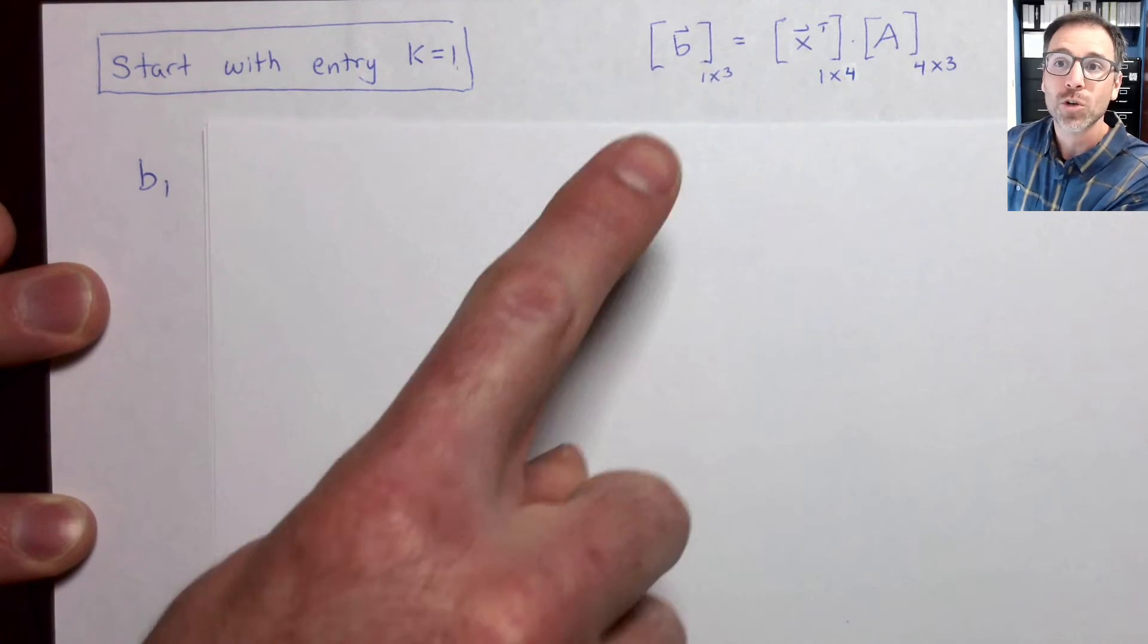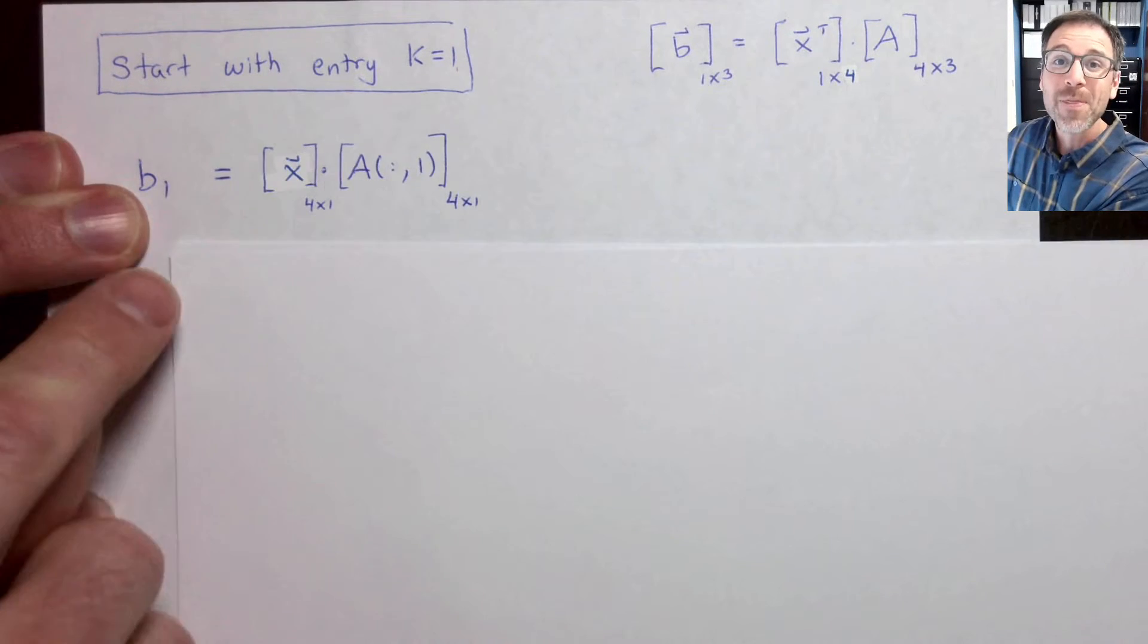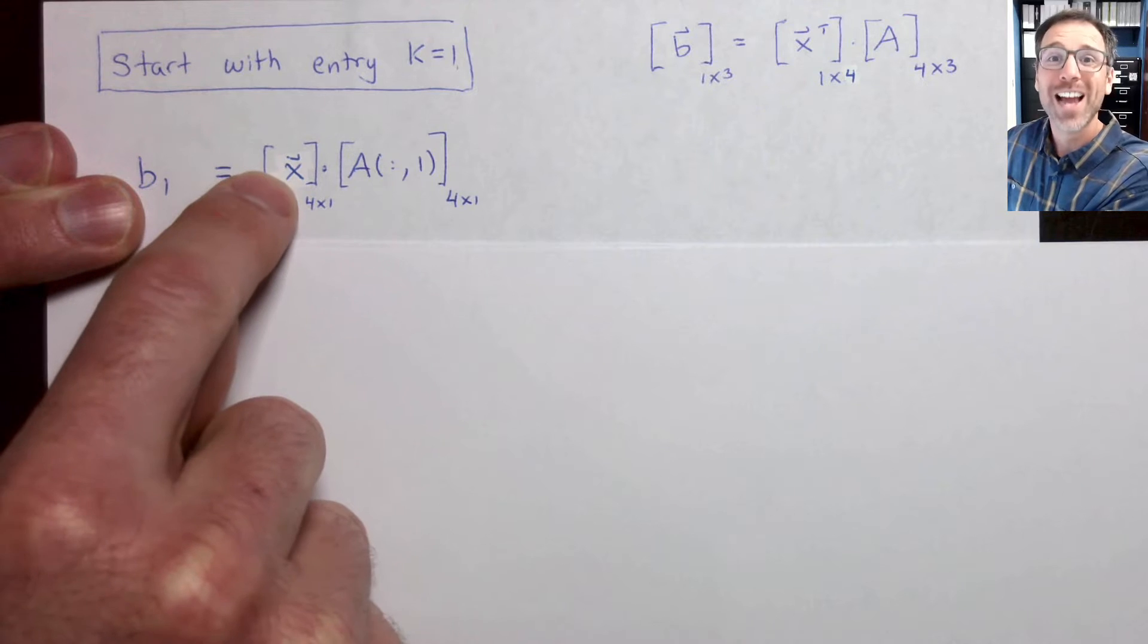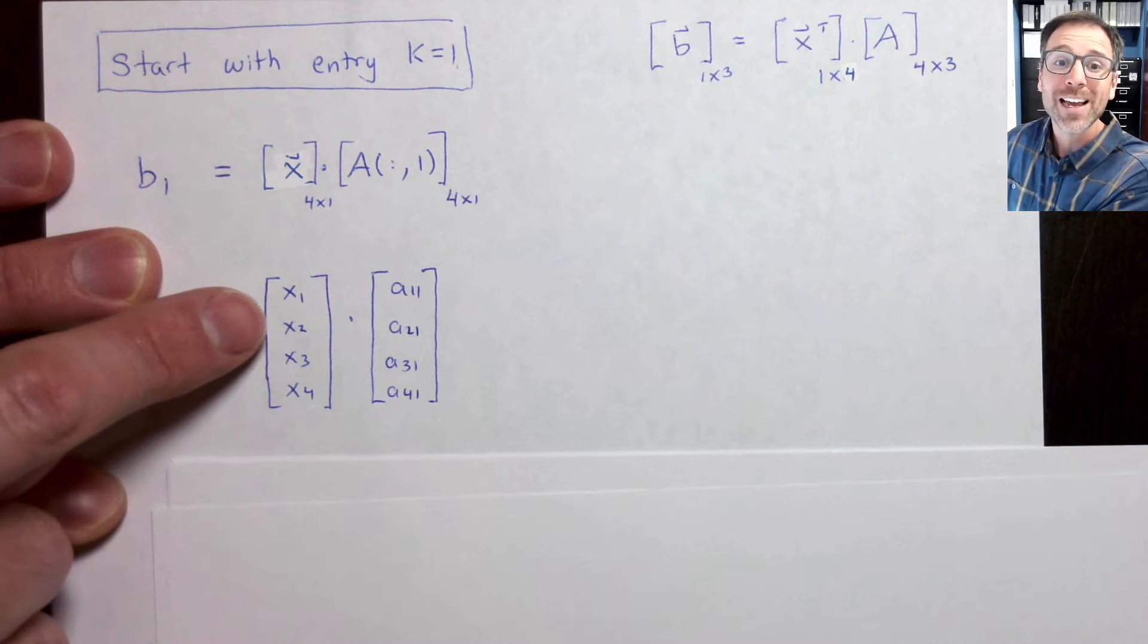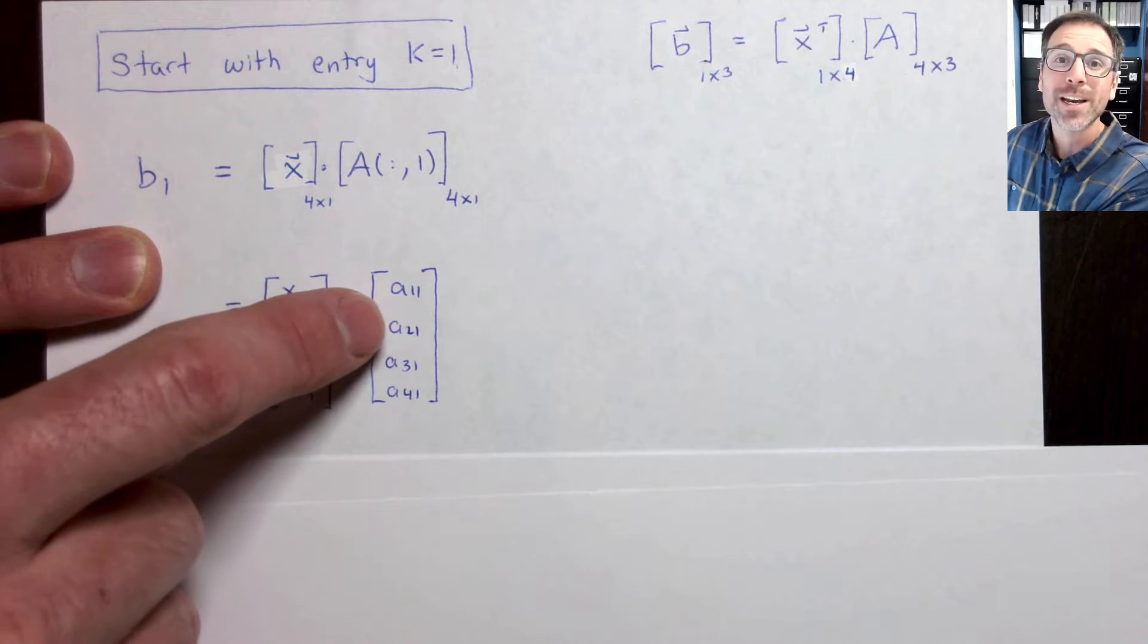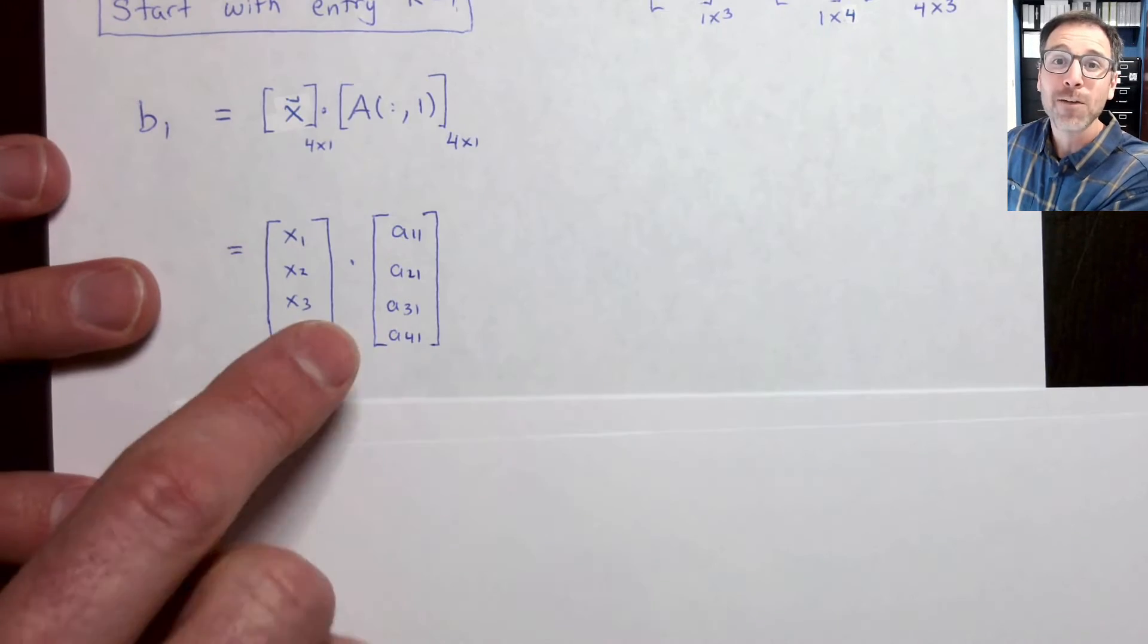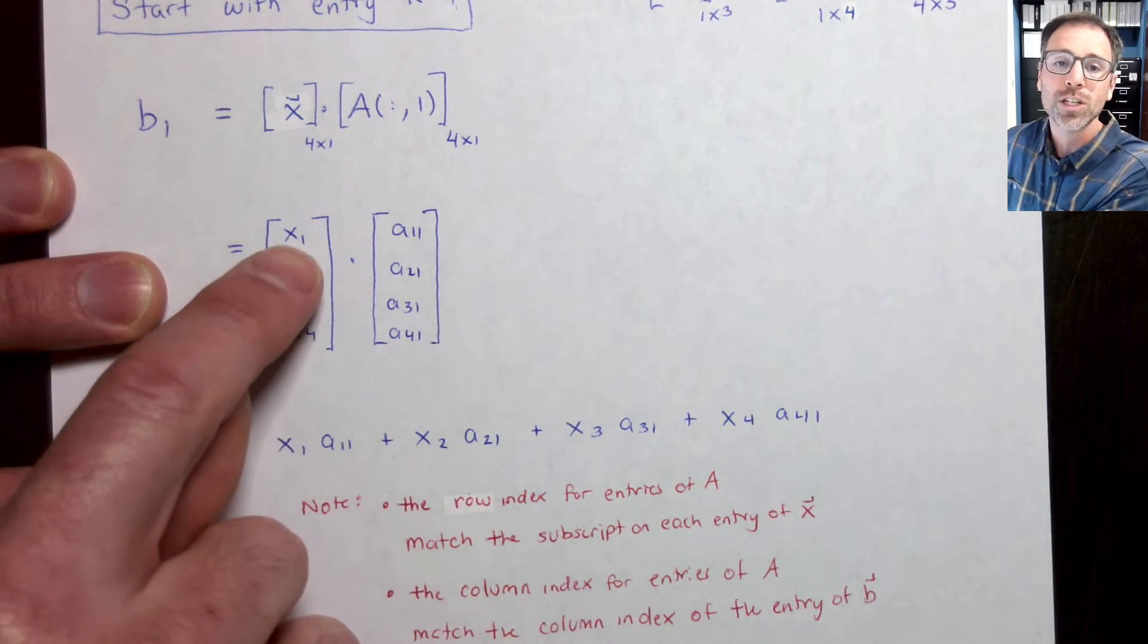We'll start with k equal to 1, so the first entry of b. We remember, I'm going to actively test myself, that the first entry is going to be the dot product between the vector x and the first column of the matrix A, but we know what those look like. This is going to be x1, x2, x3, x4. This one's going to be a11, a21, a31, a41.